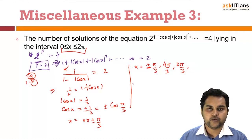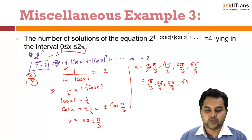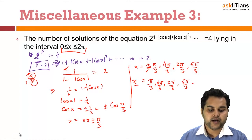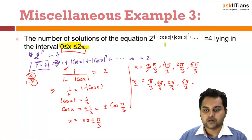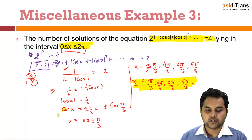For n = 2 with the negative sign: x = 2π - π/3 = 5π/3, which is valid. So the solution set in (0, 2π) is x = π/3, 2π/3, 4π/3, 5π/3 — four solutions. The range was given as (0, 2π), and nπ ± π/3 is the general solution.